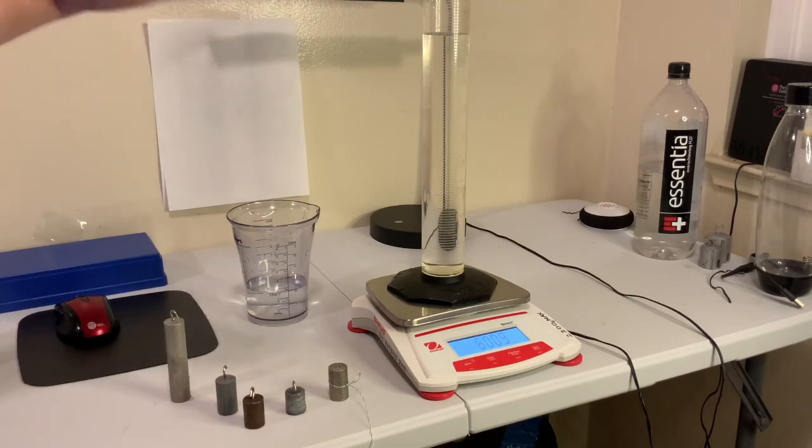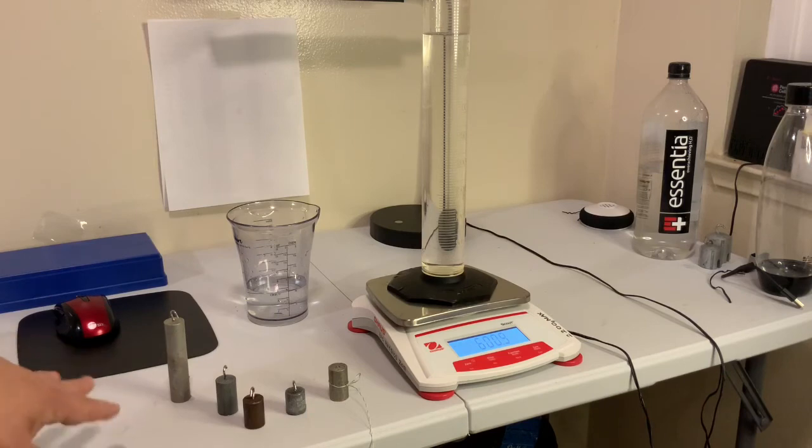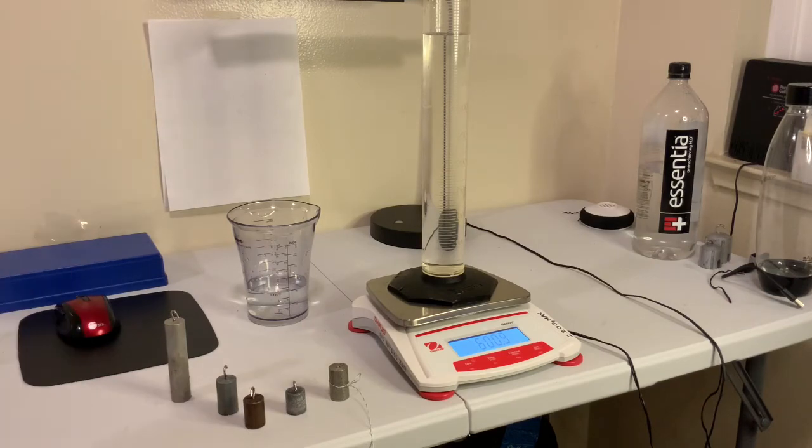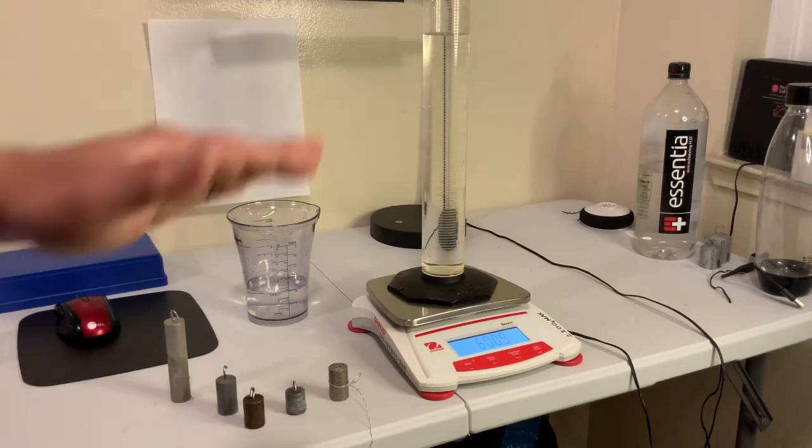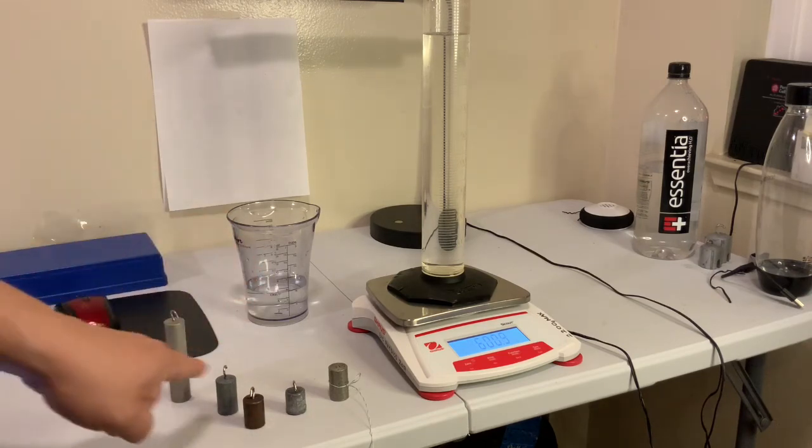Now again, as before, you'll have to look up the density of these materials. In this case here, we're using kilograms per cubic meter for the density. So you have to go online and find these things as values associated with kilograms per cubic meter. And then give me a percent error associated with each one of these samples.